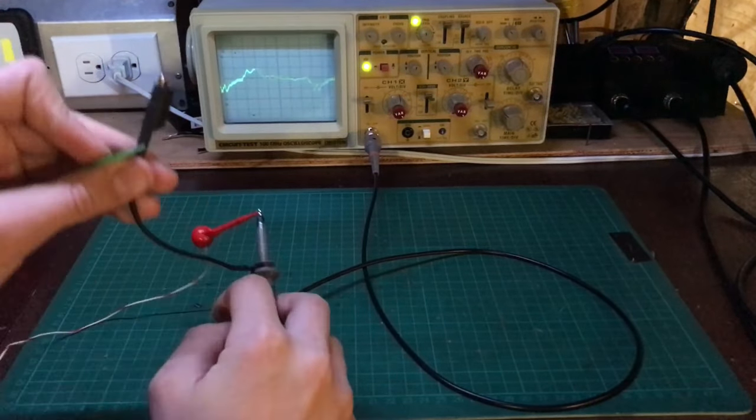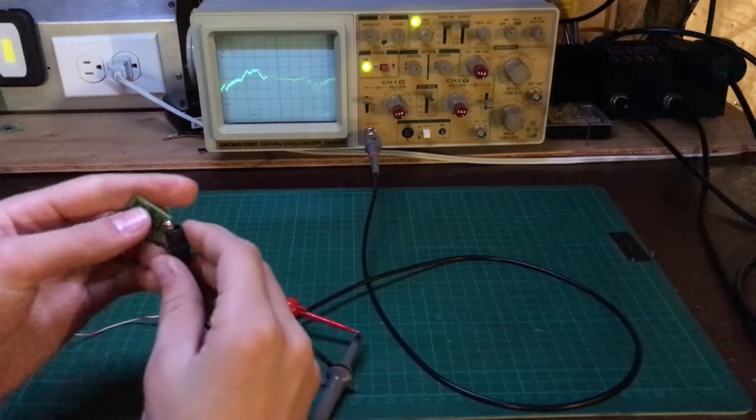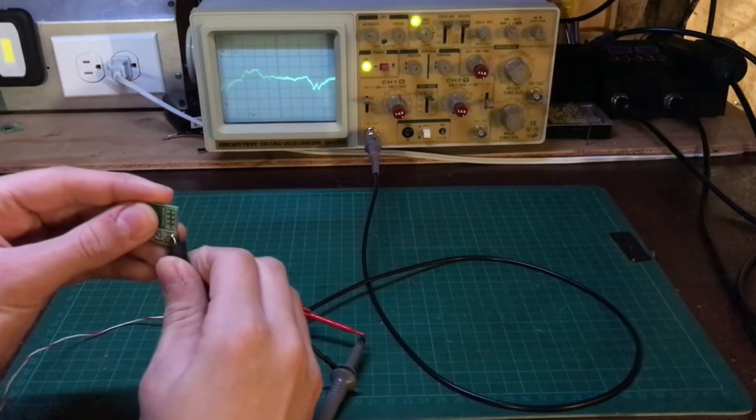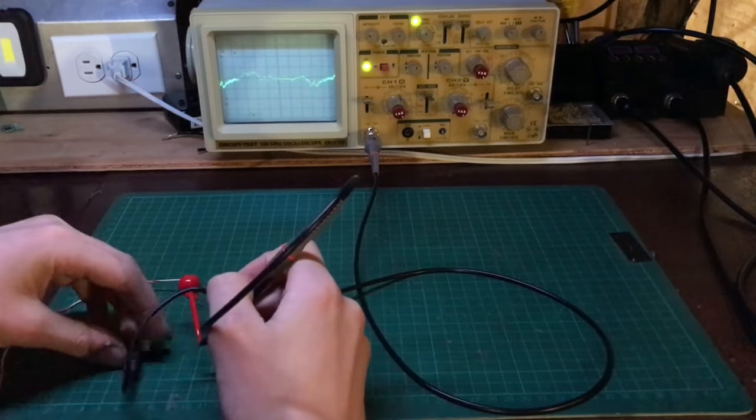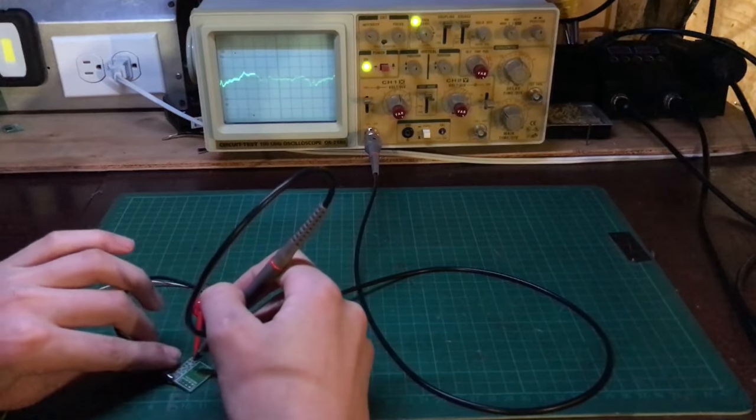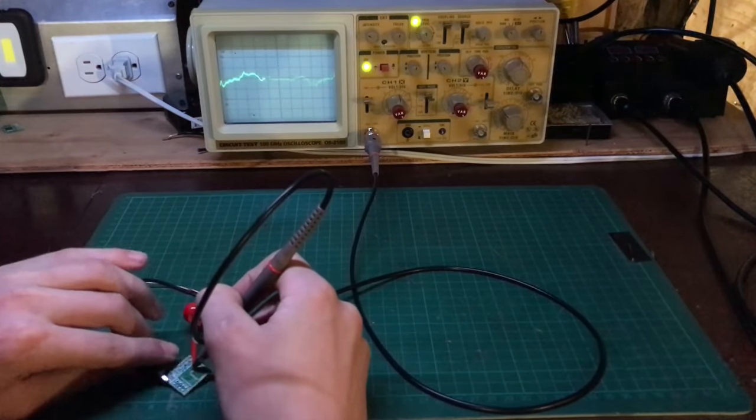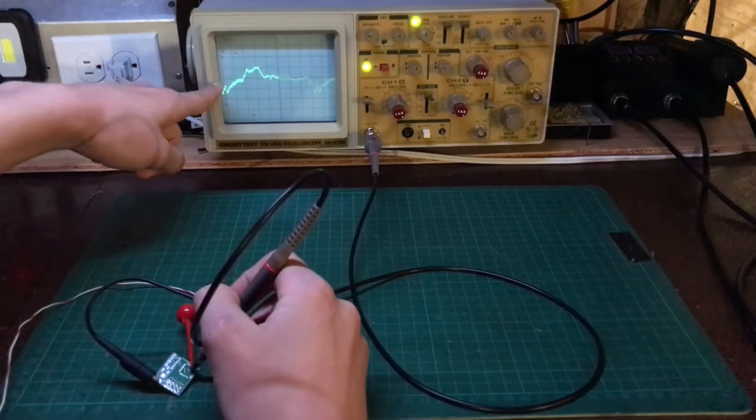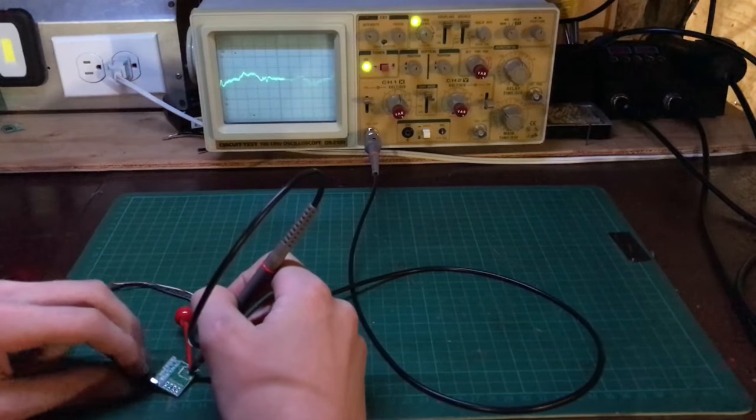So what we can do now is we can take our ground of our oscilloscope and we can connect that to wherever we want to test. And then we can just poke around with our probe until we find the pin that makes the line on the oscilloscope go flat because it'll be connected to ground.